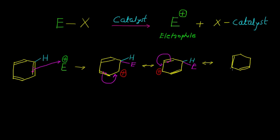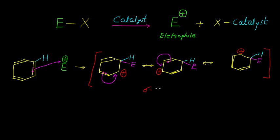Now here we have a new carbon-carbon double bond, and this positive charge which is present on this carbon will shift on this carbon atom. The hydrogen as well as the electrophile are on this carbon. All these intermediates are generally known as sigma complex, where the positive charge gets delocalized into the benzene ring.